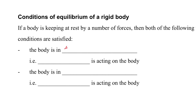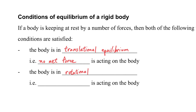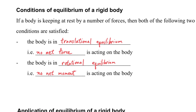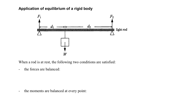Here are the conditions for the equilibrium of a rigid body. If a body is kept at rest by a number of forces, then both of the following conditions are satisfied: if it is in translational equilibrium, there is no net force acting on it; and if it is in rotational equilibrium, no net moment exists on it.